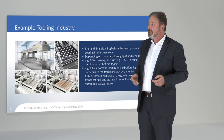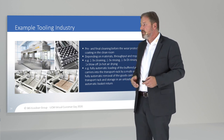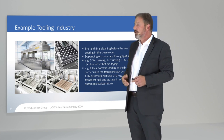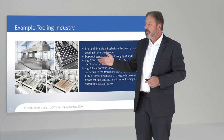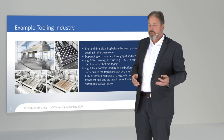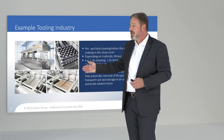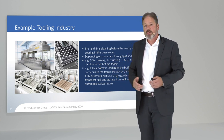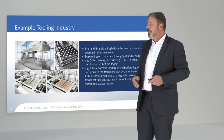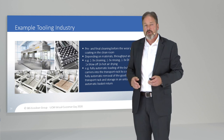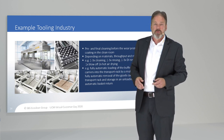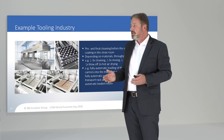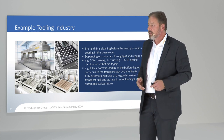A further example is the tooling industry — in this case, a pre- and final cleaning before wear protection coating in the clean room, again depending on materials, throughput, and requirements. This shows the number of cleaning tanks, rinsing tanks, final rinsing, and drying system. Before going into hot air drying, a blow-off system eliminates all water drops from the parts. Fully automatic loading of buffered goods carriers into the transport rack by a multi-axis robot is also possible, with an automated unloading buffer that brings baskets back to the loading part.